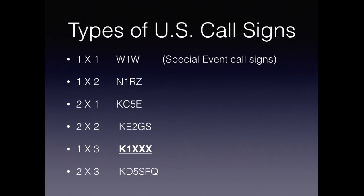The types of call signs you'll encounter in the US are basically about six formats. There's a 1x1, which is typically a special event call sign such as W1W or Whiskey 1 Whiskey. Then there's 1x2, such as November 1 Romeo Zulu. A 2x1 like Kilo Charlie 5 Echo. A 2x2 like KE2GS. A 1x3 like Kilo 1 XXX. And a 2x3 such as KD5SFQ. The 1 is underlined, which implies that it is a test question.